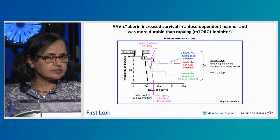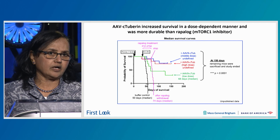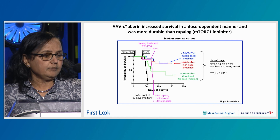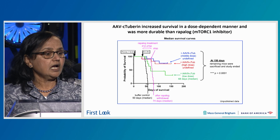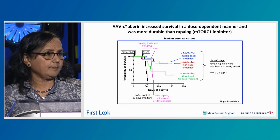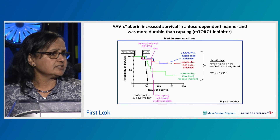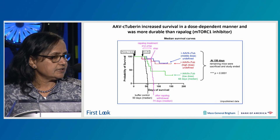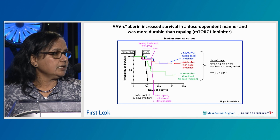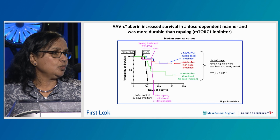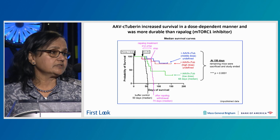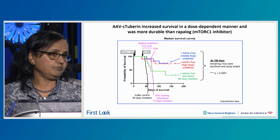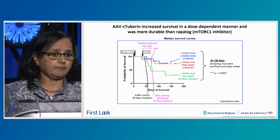We next compared rapalog treatment versus a single dose of AAV C-tuberin. Starting at P03, median survival for these animals is 50 days. When rapalog is given starting at P21 and removed at P56, the animals die with a median survival of 74 days. At a low dose of AAV C-tuberin, median survival is 68 days, while a middle or high dose extends survival up to 150 days. This clearly depicts that a single dose of AAV C-tuberin extends survival beyond rapalog, and could complement patients who are already on rapalog.